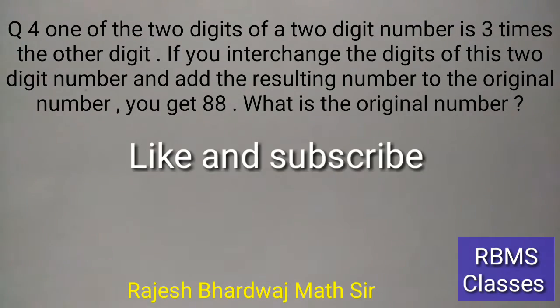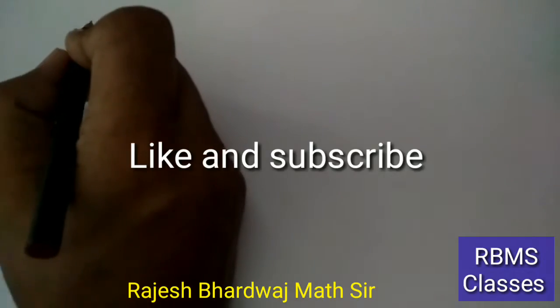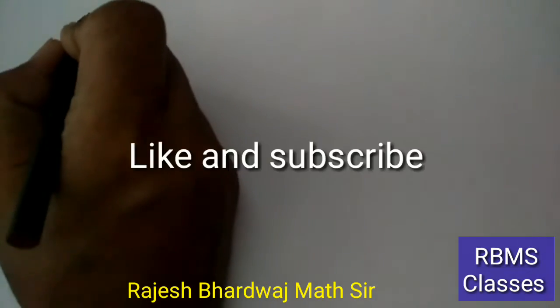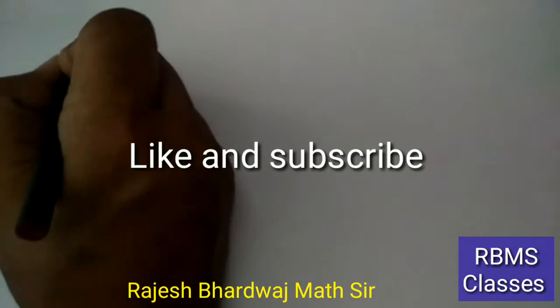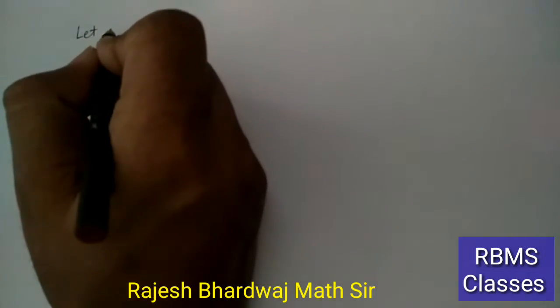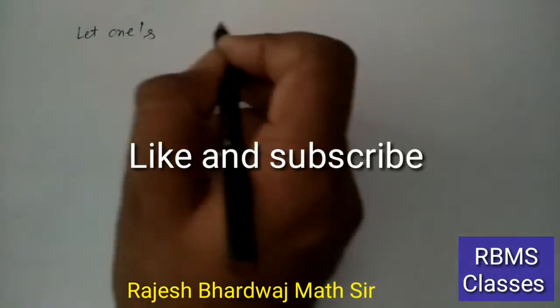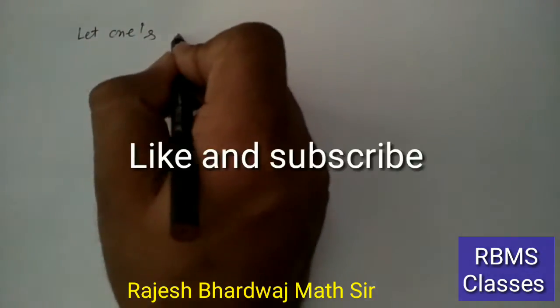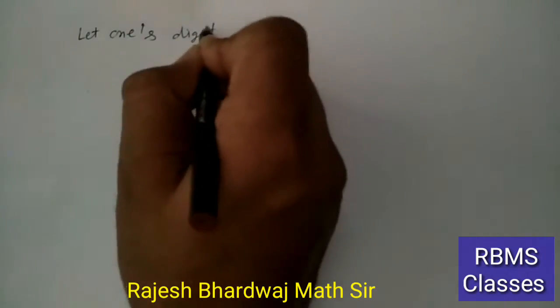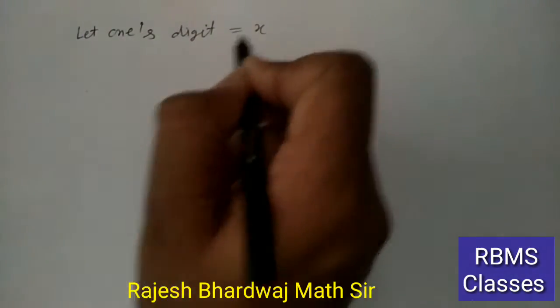तो बच्चों हमने इसमें original number find करना है। Original number find करने के लिए सबसे पहले हम let करेंगे। Let ones digit = x कर लिया।